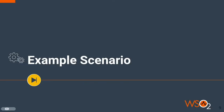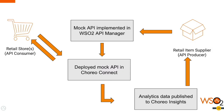Let's move on to the example scenario with the demonstration. Let's say there is a retail item supplier going to implement a new API with the aim of providing inventory details to its consumers. Since this is the starting point of the API implementation, they are expecting to provide the retail store API as a mock API. To achieve this, they are using WSO2 API Manager as the control plane and the mock API is deployed in the Choreo Connect. Also, they have configured this setup to publish analytics data to Choreo Insights.